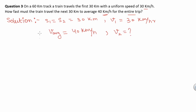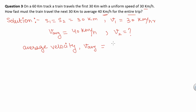We know that average velocity is given as total distance travelled by the train divided by total time taken to travel. So average velocity is equal to S1 plus S2 upon T1 plus T2.